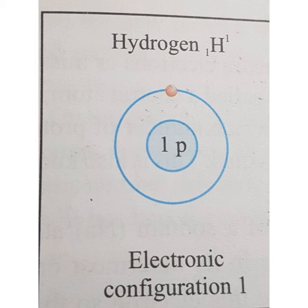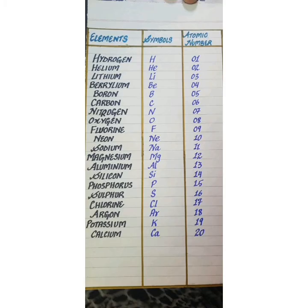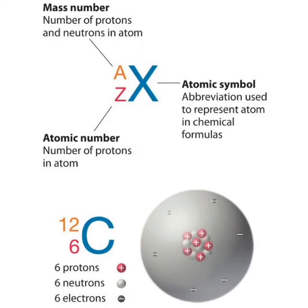In today's lecture we will see a few more examples, so be ready for it. I have provided you the list of elements from atomic number one to twenty. As you can see on the screen, the list includes hydrogen, helium, lithium, beryllium, boron, carbon, nitrogen, oxygen, fluorine, neon, and so on. I provided this list in the previous lectures.